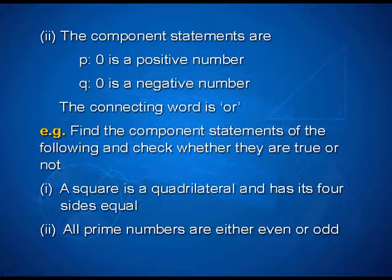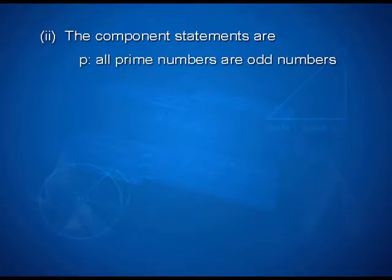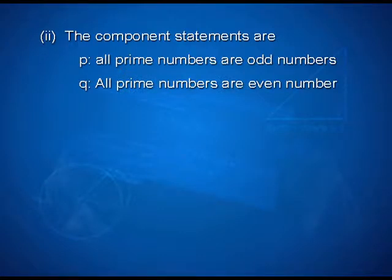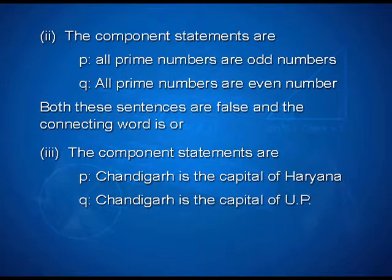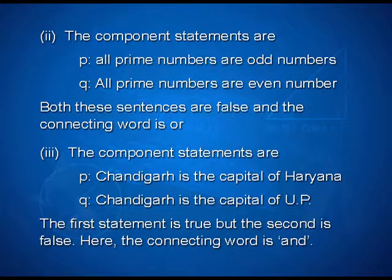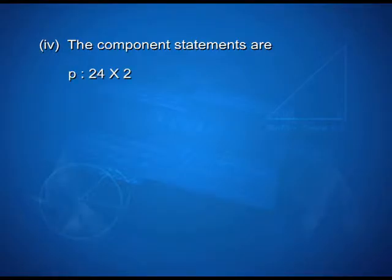In the second one, the component statements are P: 0 is a positive number, and Q: 0 is a negative number. The connecting word is OR. Another example: find the component statements of the following and check whether they are true. First: a square is a quadrilateral and has its four sides equal. Second: all prime numbers are either even or odd. The component statements for the second are P: all prime numbers are odd numbers, and Q: all prime numbers are even numbers. Both these statements are false and the connecting word is OR.